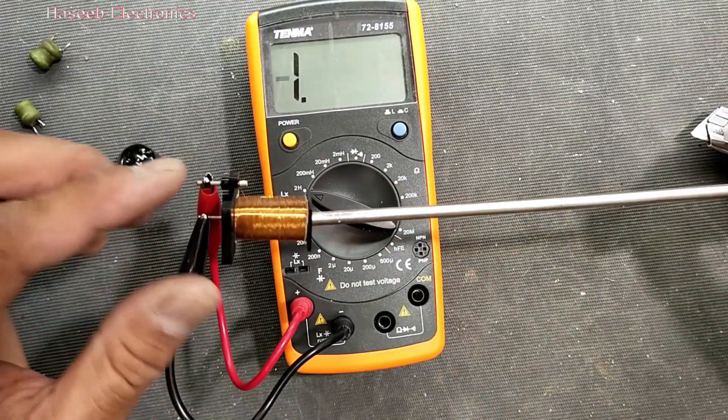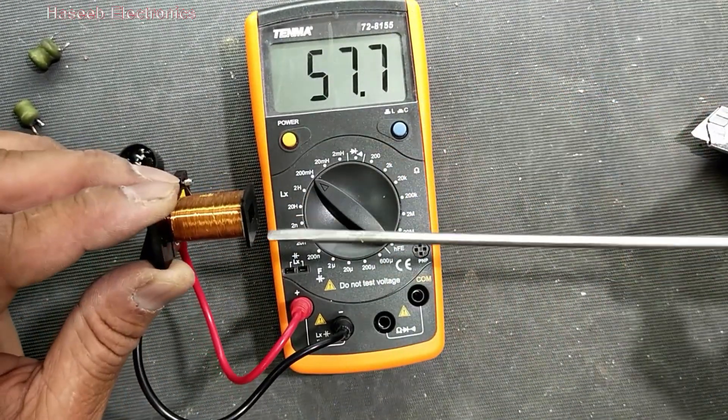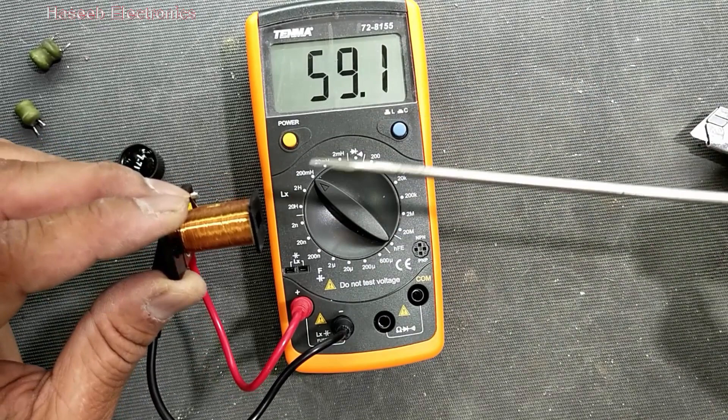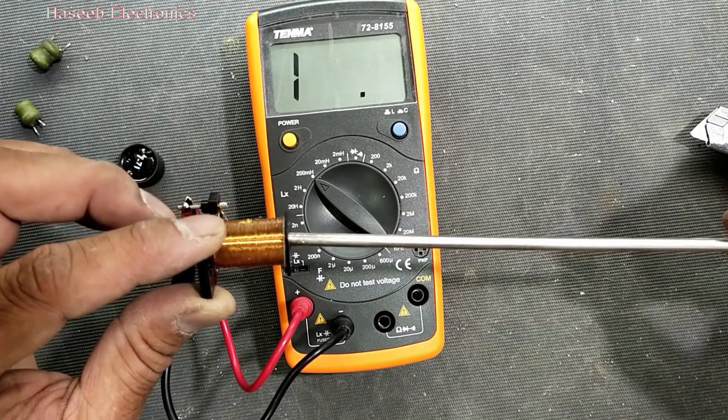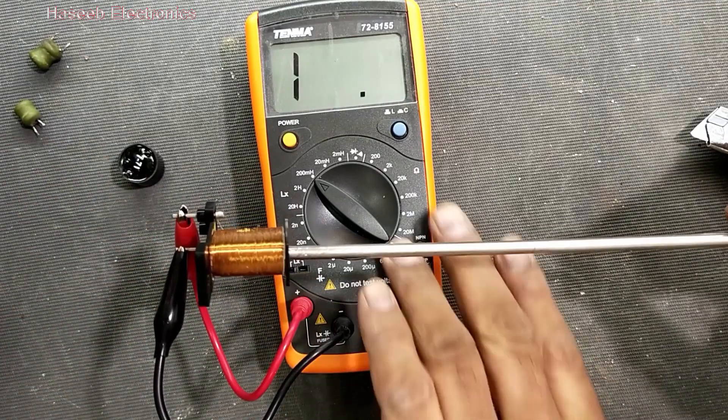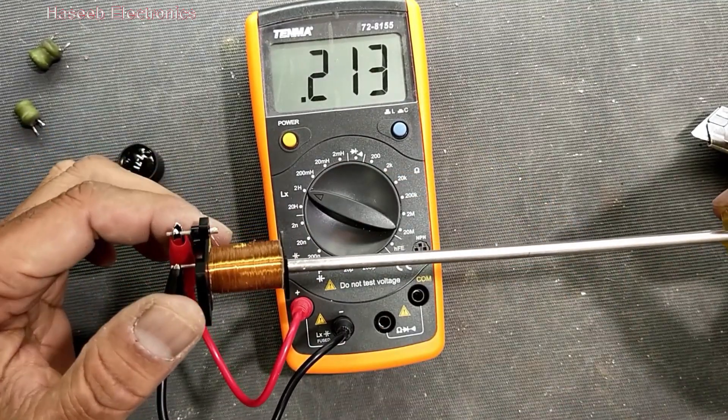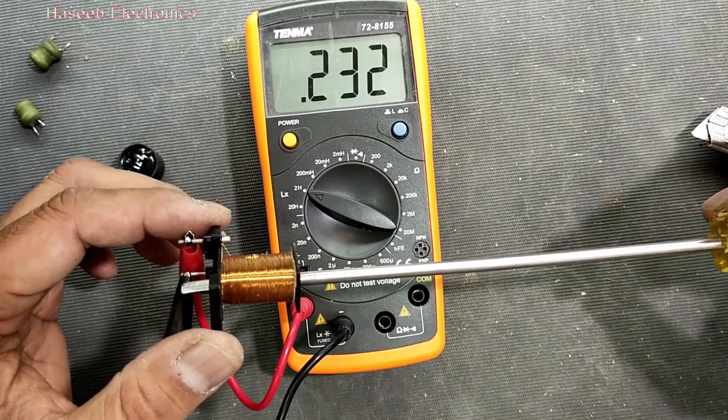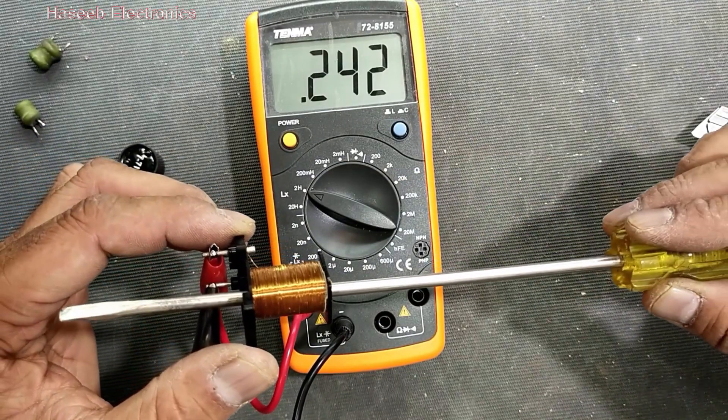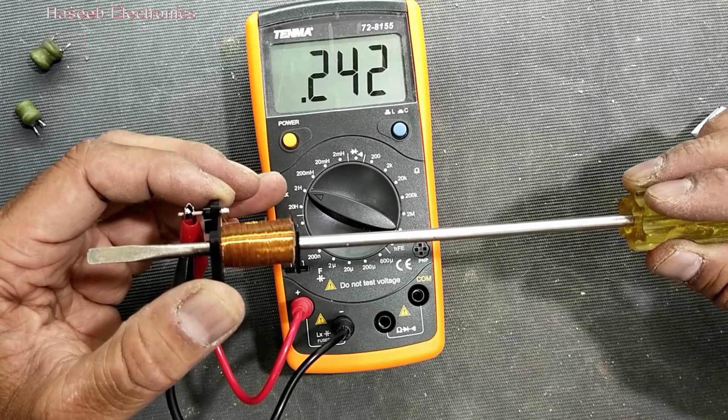So the 59 millihenry coil, when I insert the screwdriver, we applied a core, so the reading becomes high. 59, now it is over range because its inductance is increased. Increase the range, so it is 2, 1, 2, 3, 2, 4, 2, 4, 2, 0 - 0.242, 242 millihenry.